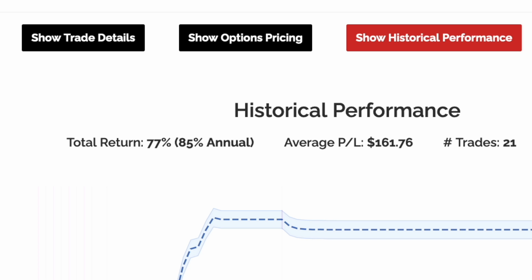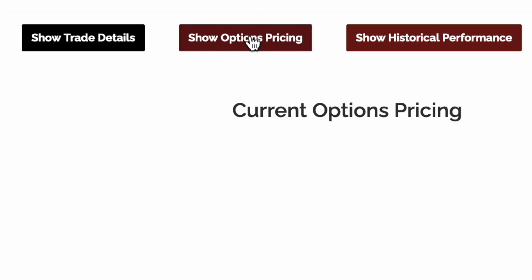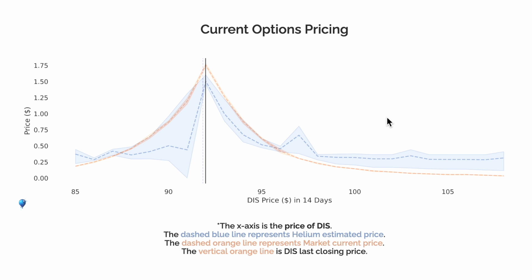Now let's look at the options pricing for this trade. For the options in this trade expiring in 14 days, this graph represents the price difference between Helium's AI models and the market. If Helium's models are correct, kinks or dislocations in this graph can potentially indicate profitable trading strategies.